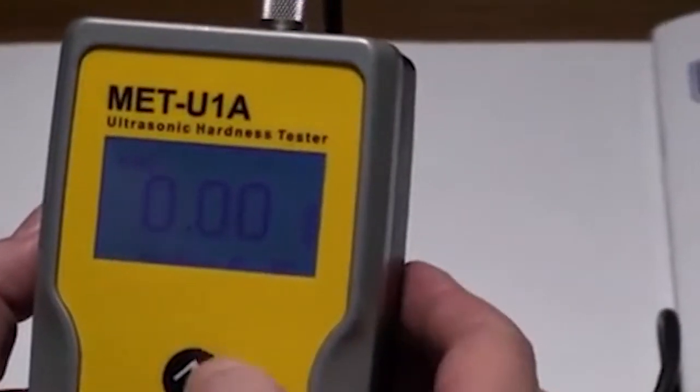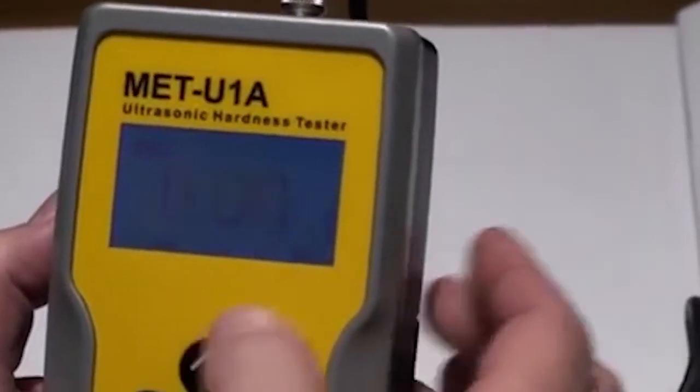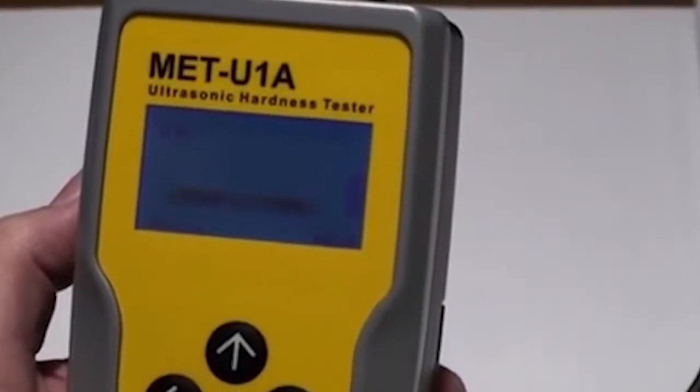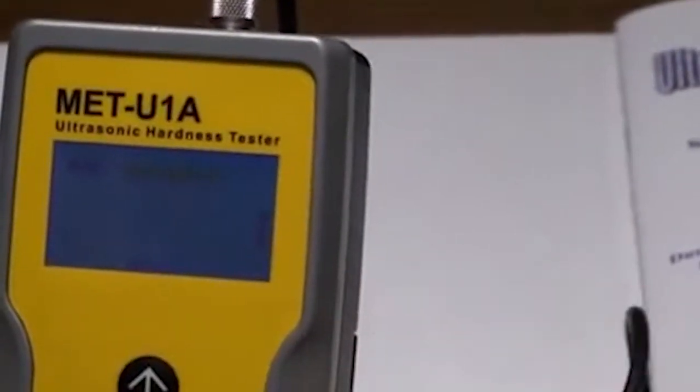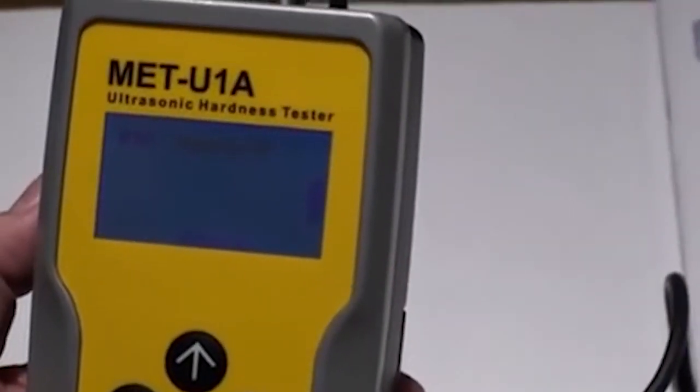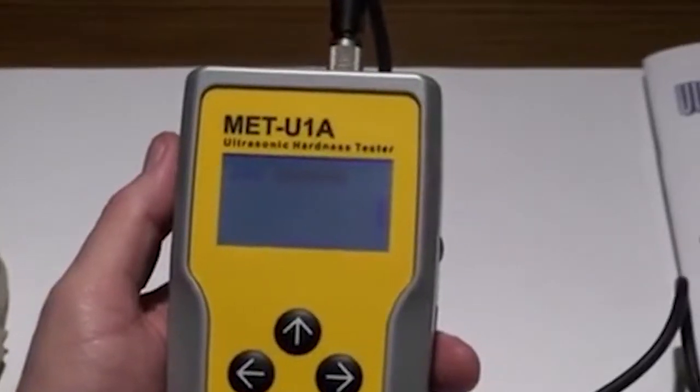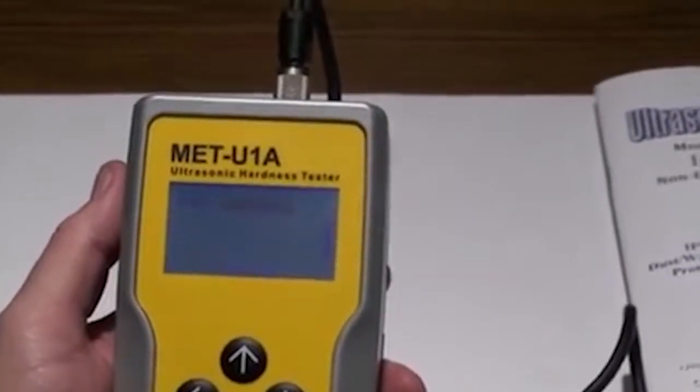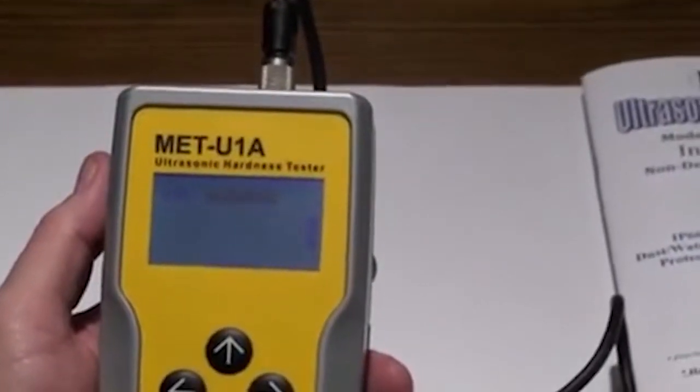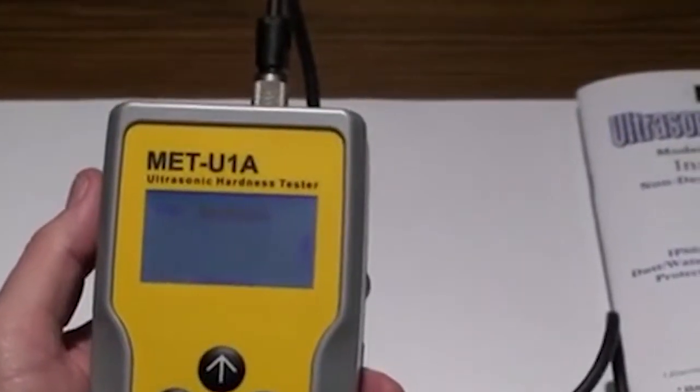Hitting the up arrow button, you now see the word test flashing with arrows left and right. Hit the up arrow again, and this will bring us to the scale. You will now see the word scale flashing with arrows. Left of this is the scale now being used, probably HRC, used for steels.